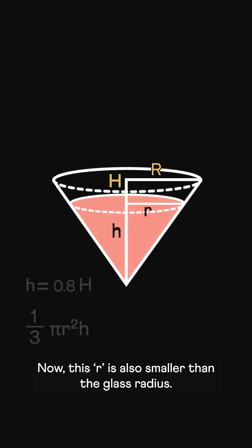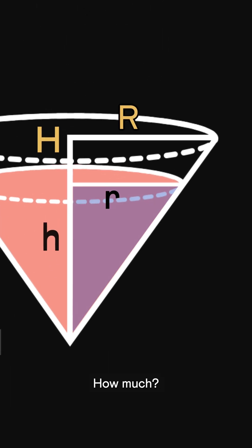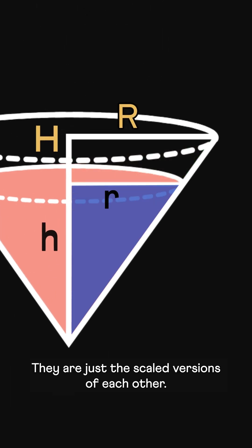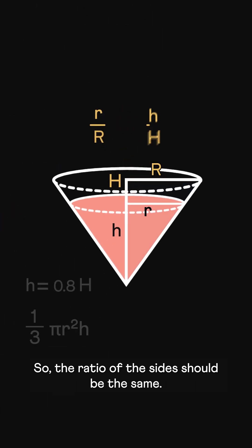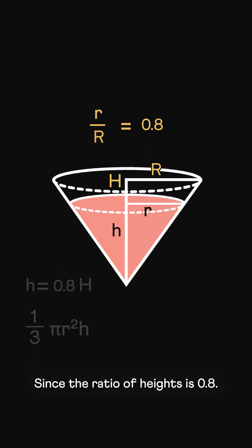Now this r is also smaller than the glass radius. How much? Take these two triangles. They are just scaled versions of each other. So the ratio of the sides should be the same. Since the ratio of the heights is 0.8, small r is 0.8 times capital R.